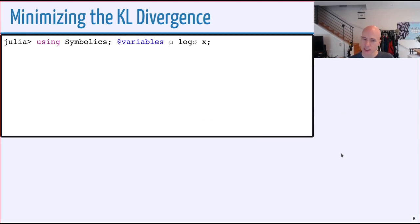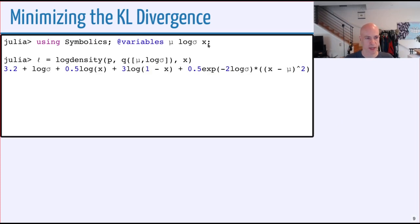Let's try some x. We can do this using the symbolics library. Using symbolics, let's make variables mu, log sigma, and x. Then we can make script l. This is just going to be one of these terms. This is the log density of p, that's our beta, with respect to our normal distribution at some value x. All of this is symbolic. This is the value that we get.